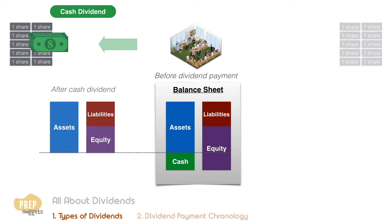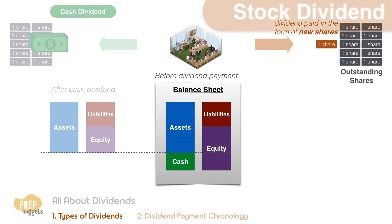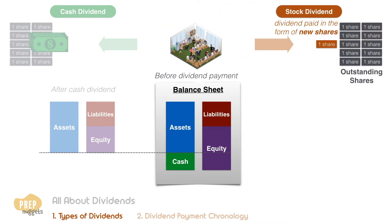Sometimes dividends are not paid in cash, but in the form of new shares known as a stock dividend. Stock dividends are commonly expressed as a percentage. A 10% stock dividend means every shareholder gets 10% more stock. So in this case, since this company has 10 shares outstanding, there is one new share issued.